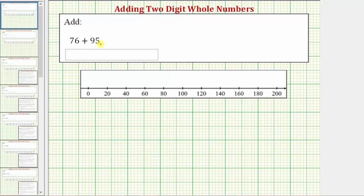We want to add seventy-six and ninety-five. For the first step, we write the sum vertically and line up the corresponding place values. So we have seventy-six plus ninety-five. Notice how we have the ones place value and the tens place value lined up vertically.